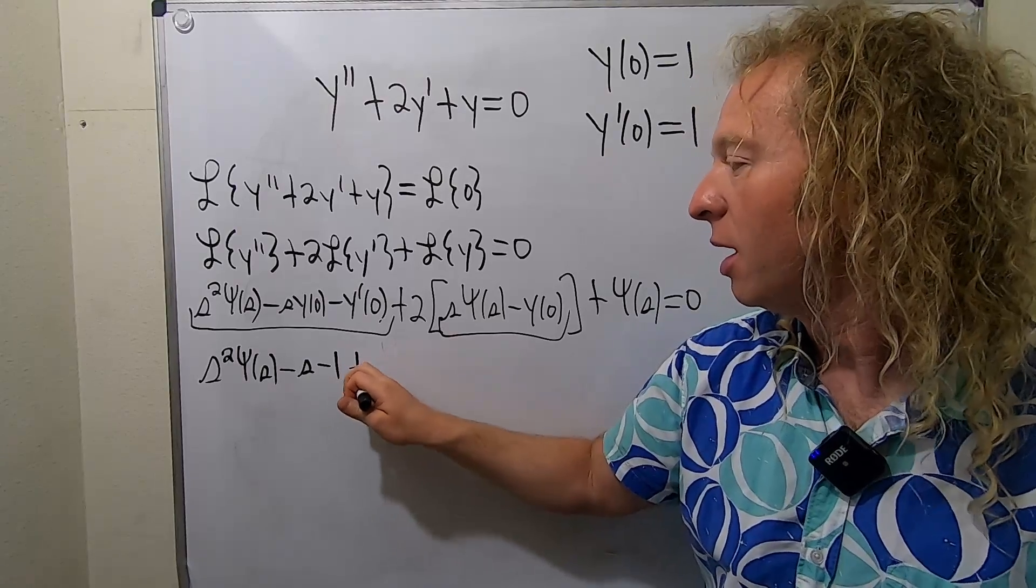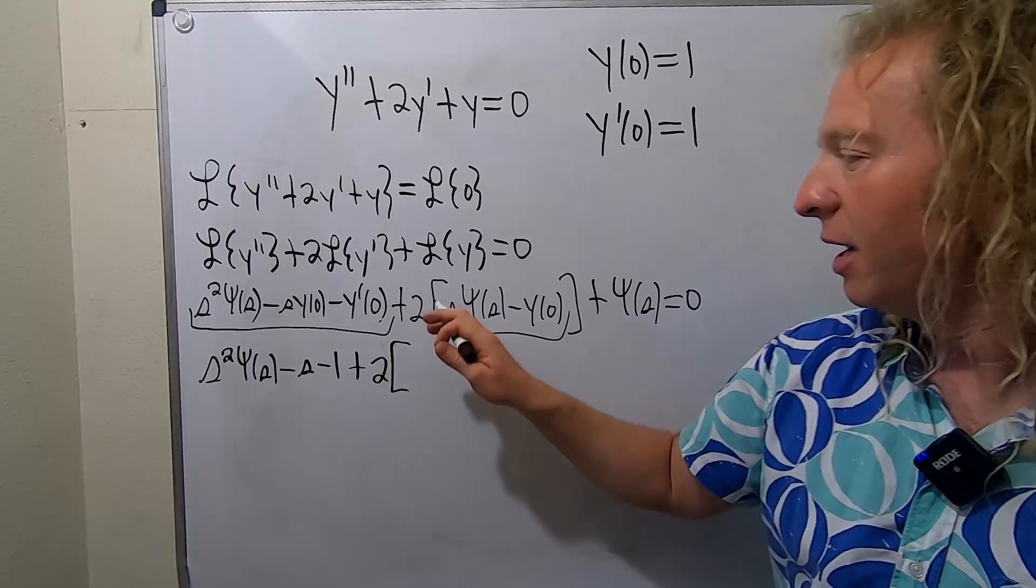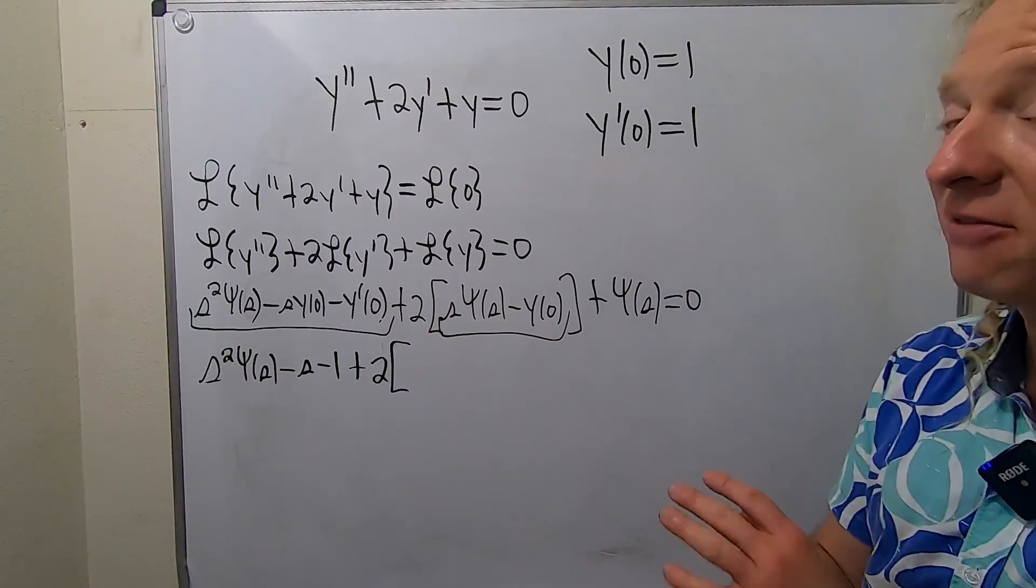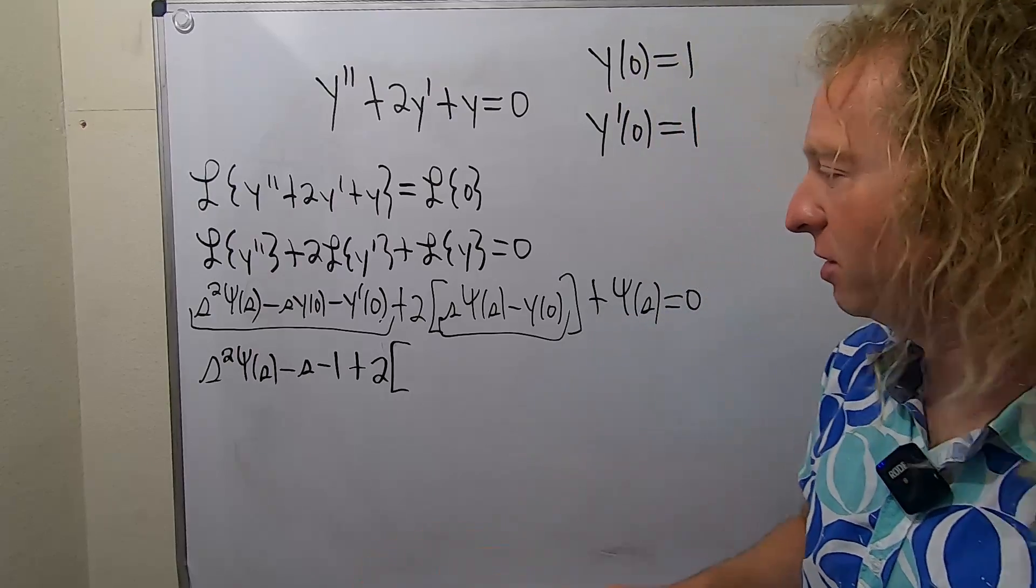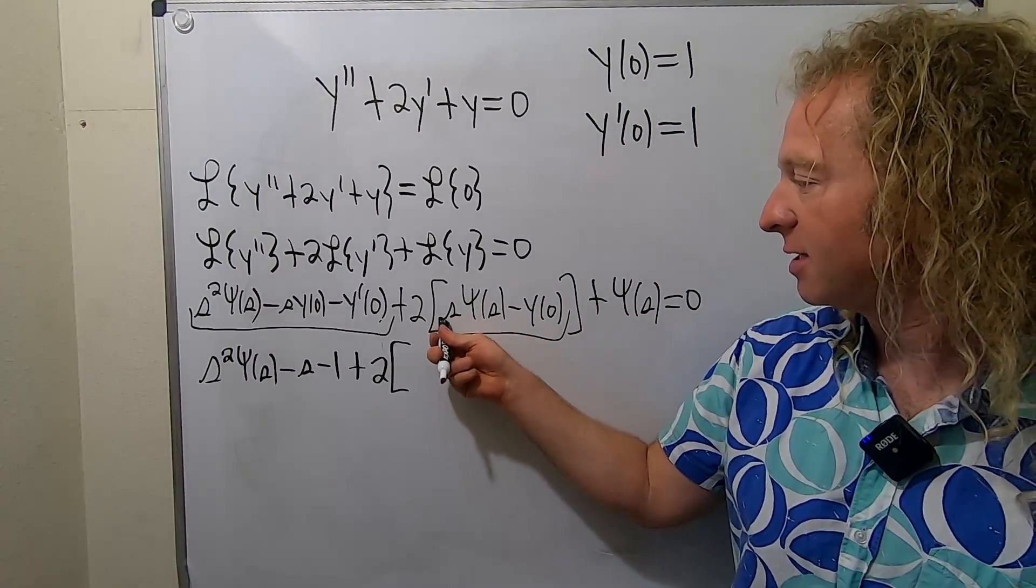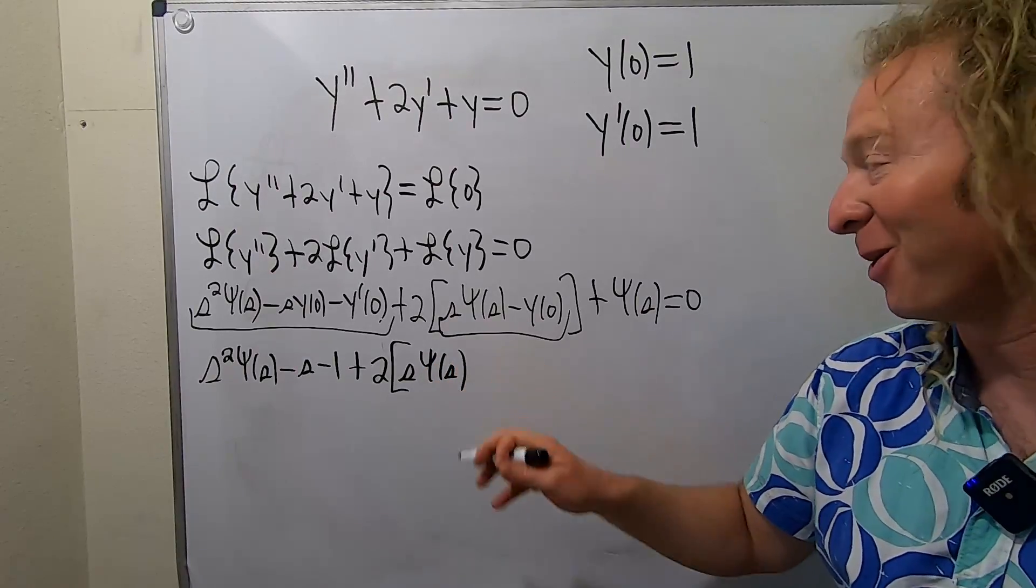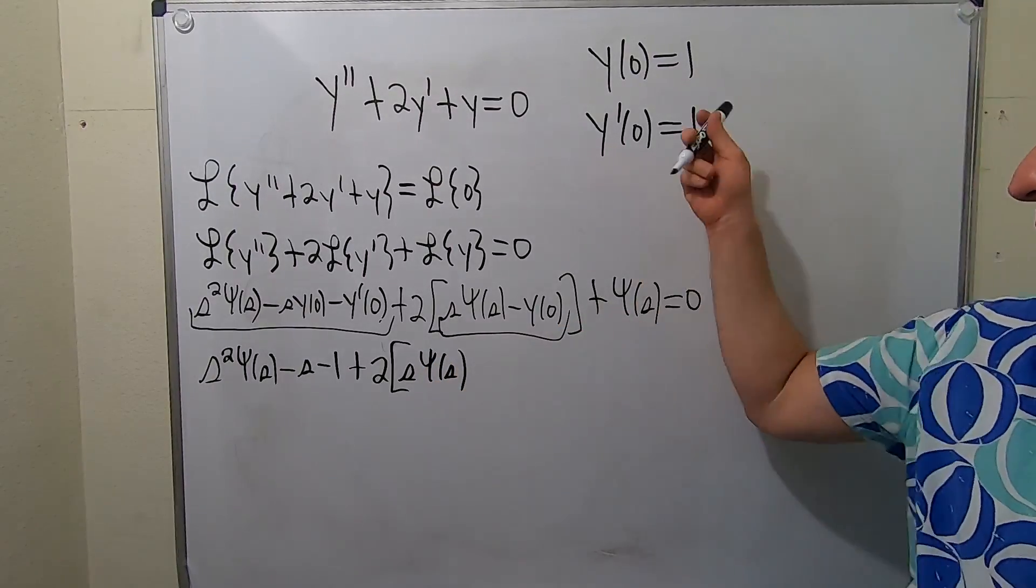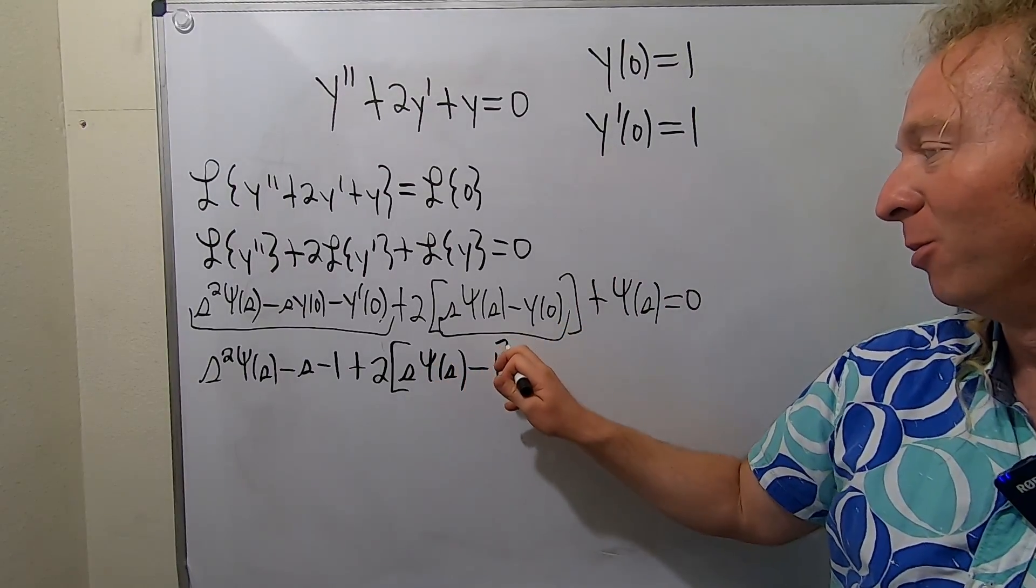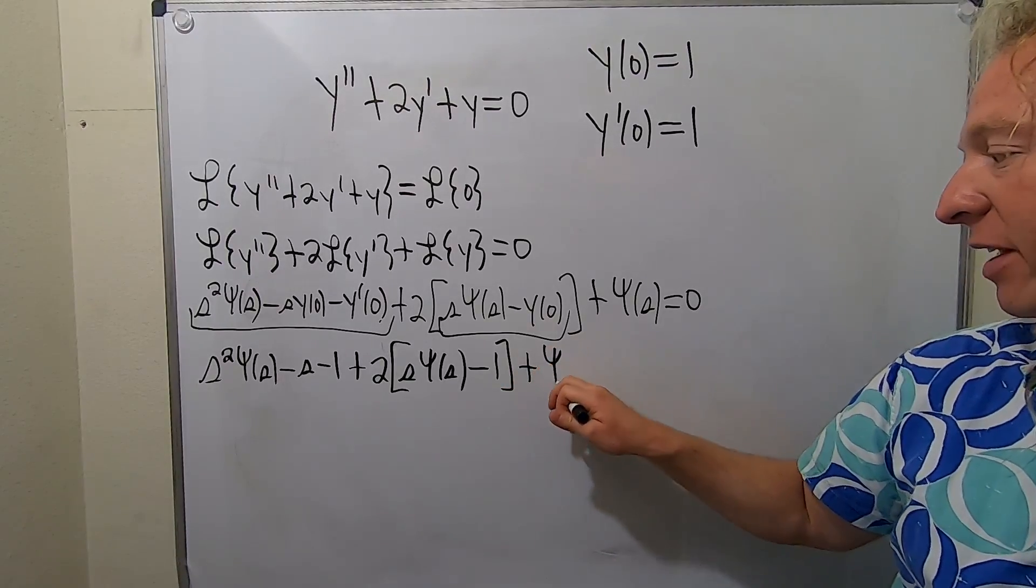Plus two. Be really careful here. It's really easy to mess up. I have not done this problem before making this video. So I'm being extra cautious. This is S pitchfork Y of S. I really don't want to mess up. These problems take a lot of work. Minus Y of zero. So minus one. Plus our pitchfork Y of S.